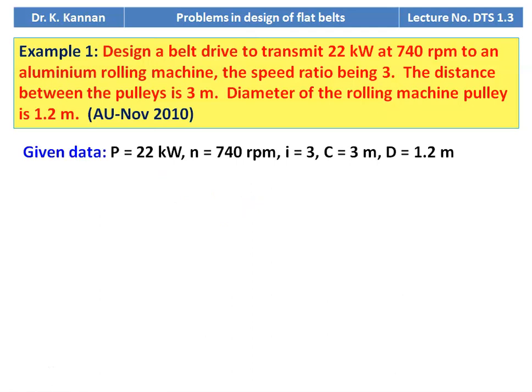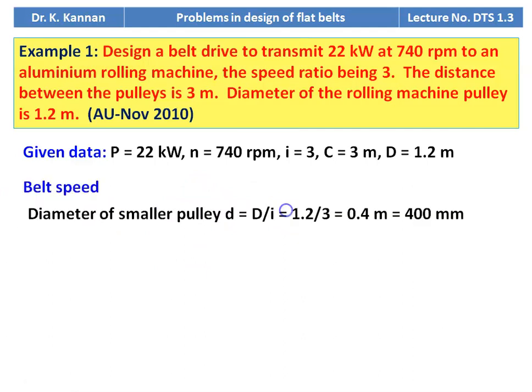Read the problem carefully and write down the given data. Power is 22 kilowatts to be transmitted to the rolling machine, which runs at a slower speed than the motor. Motor speed is 740 RPM. Capital D equals 1.2 meter, small n equals 740 RPM. Since the speed ratio I is given, we skip the I value calculation and directly calculate the belt speed.